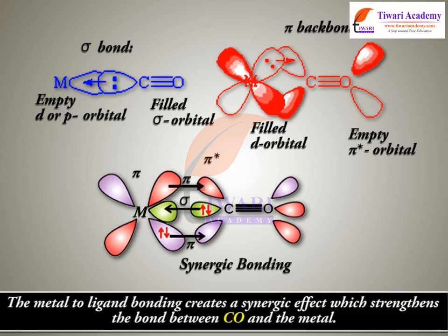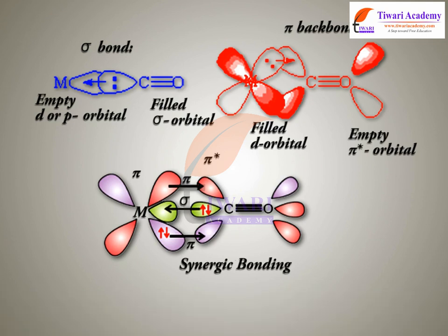The metal to ligand bonding creates a synergic effect which strengthens the bond between CO and the metal. Carbonyls have simple, well-defined structures.